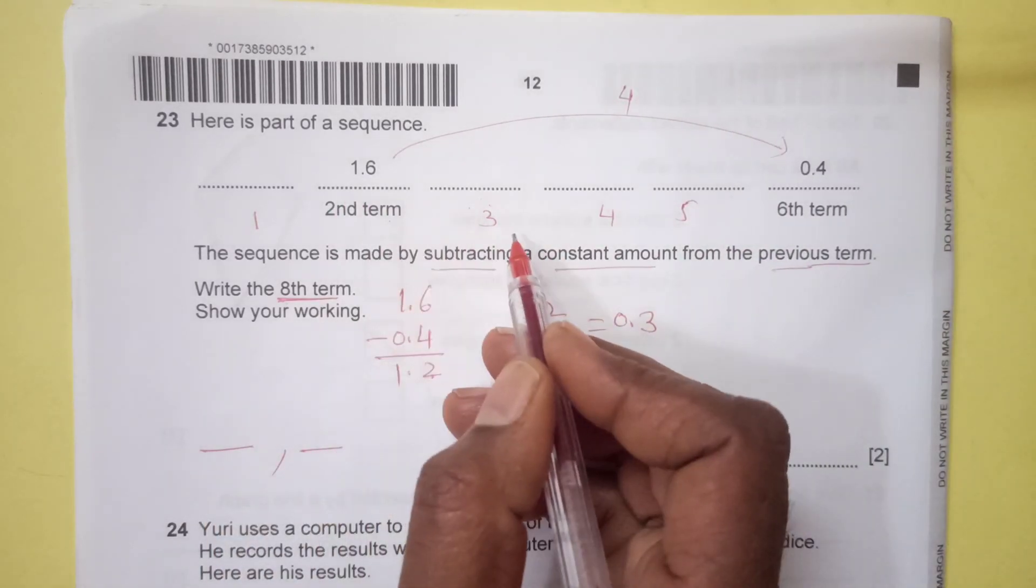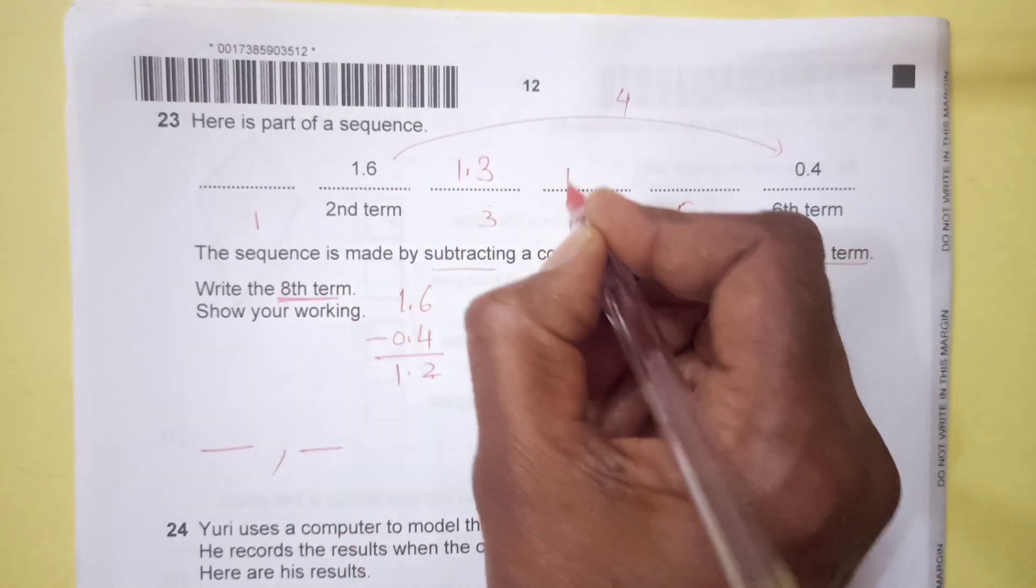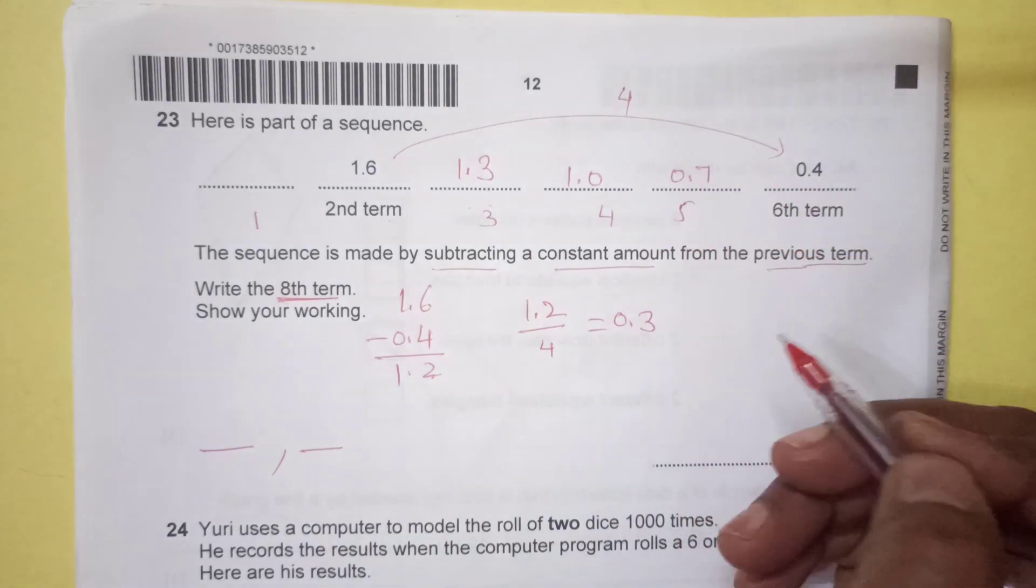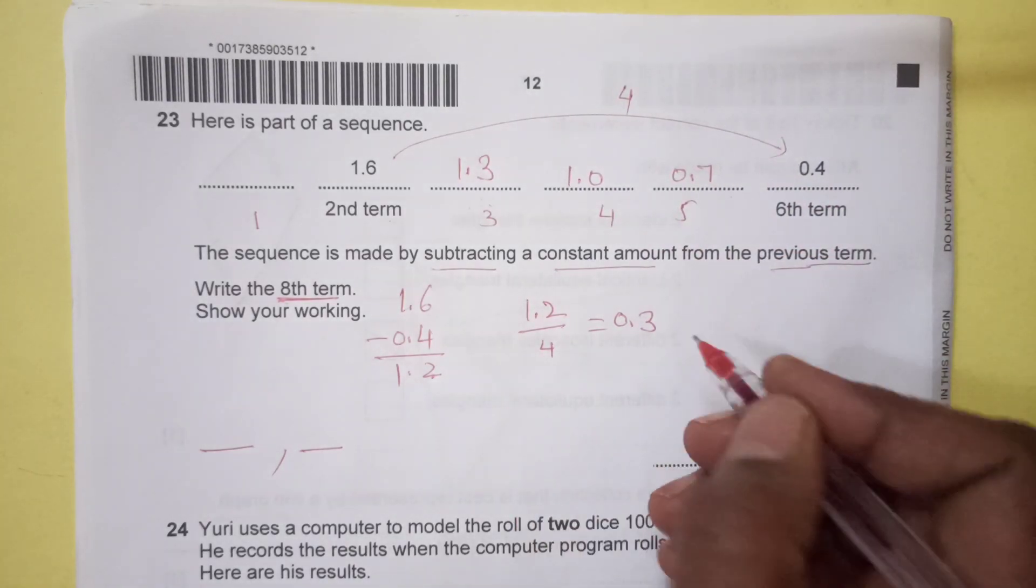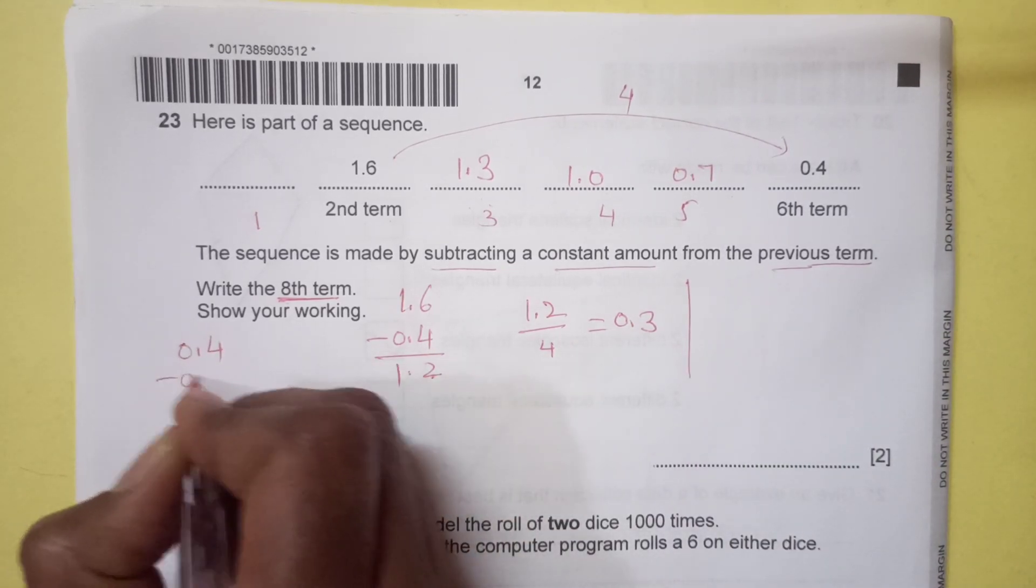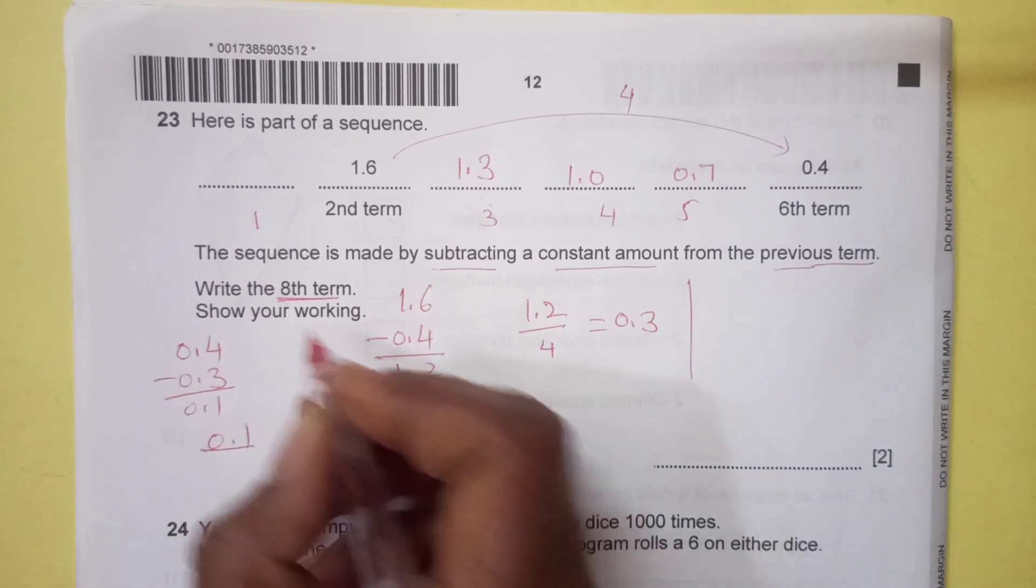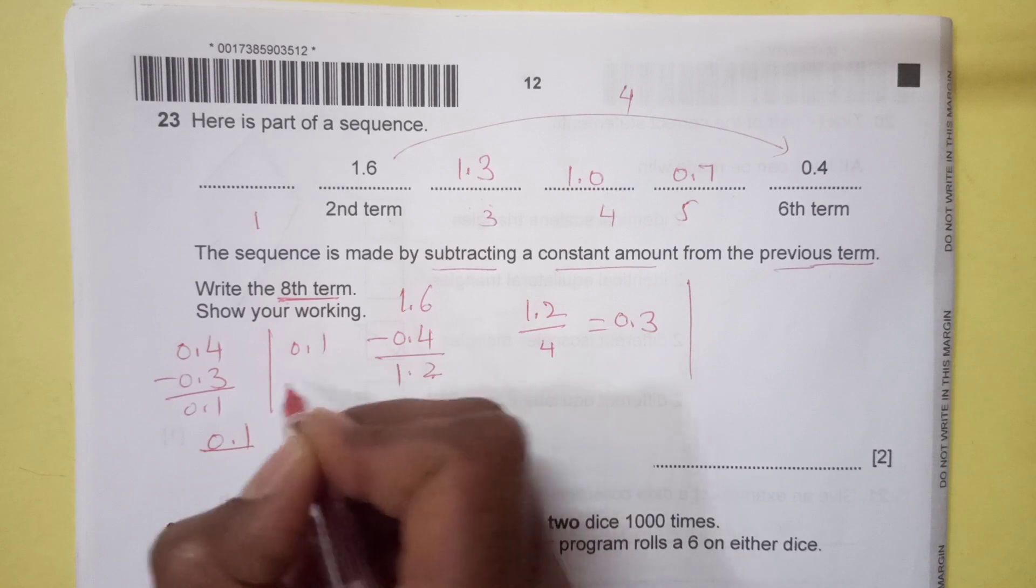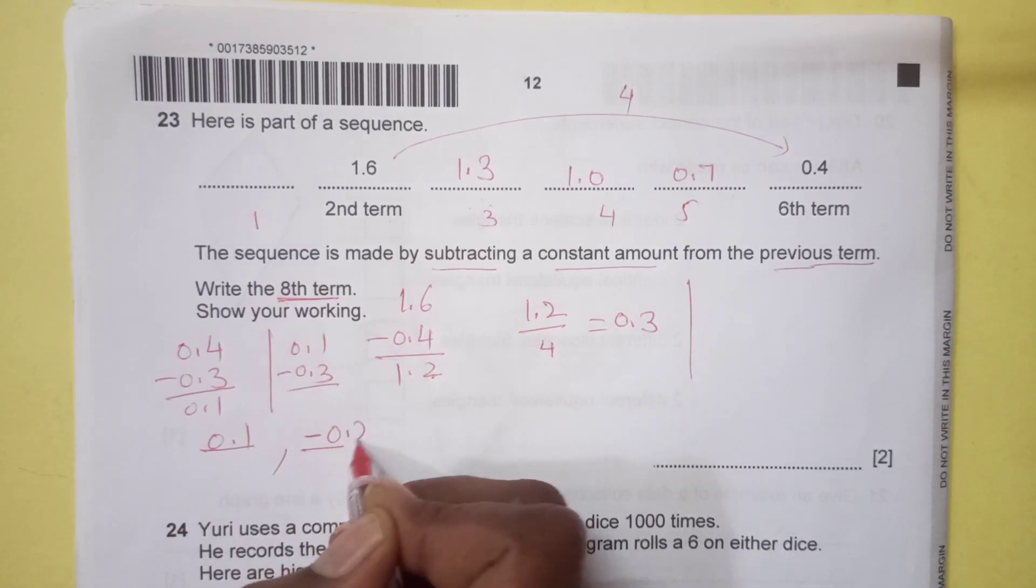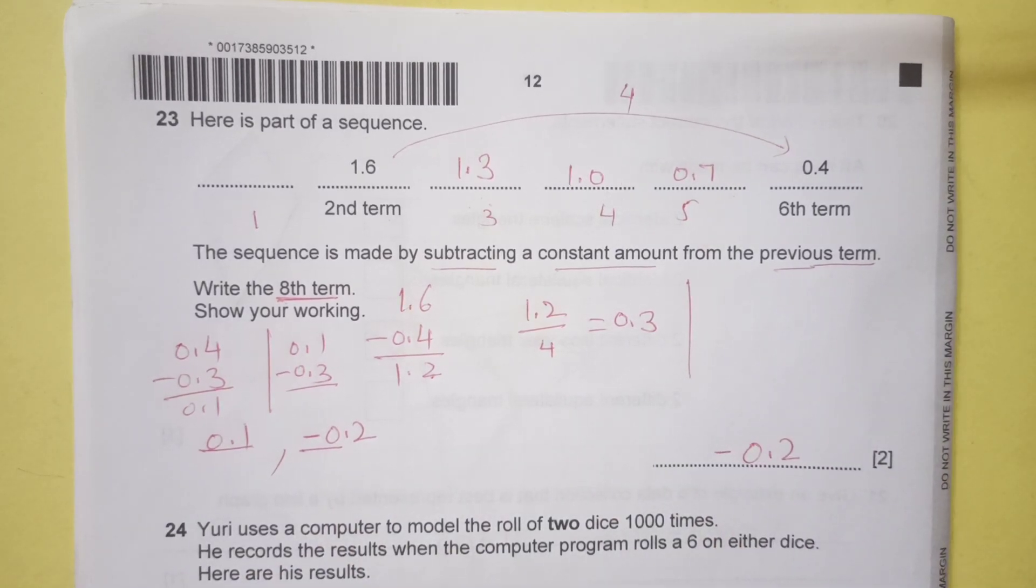1.6 minus 0.3 is 1.3, then it will be 1.0, then 0.7, 0.7 minus 0.3 is 0.4. After this, the seventh term is going to be 0.4 minus 0.3, that is 0.1. Then 0.1 minus 0.3, this is negative 0.2. So the eighth term is going to be negative 0.2.